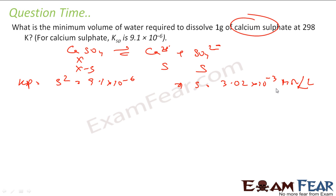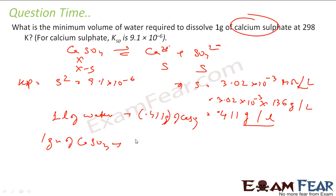So you convert it into grams per liter. So this becomes 3.02 times 10 to the power minus 3, and moles becomes grams. For calcium sulphate, the atomic mass is 136 grams per liter. This comes out to be 0.411 grams per liter. That means 1 liter of water is required to dissolve 0.411 grams of CaSO4. So to dissolve 1 gram of CaSO4, 1 gram will require 1 by 0.411 liters, that is about 2.43 liters. So 2.43 liters of water is required to dissolve 1 gram of CaSO4.